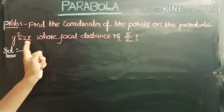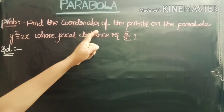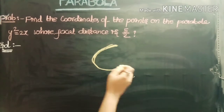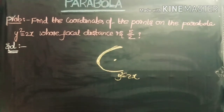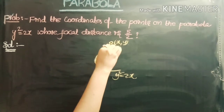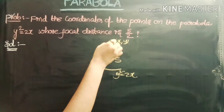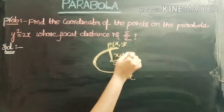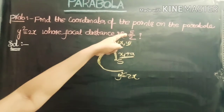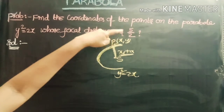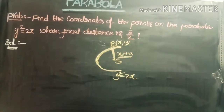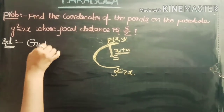Second problem: find the coordinates of the points on the parabola y² = 2x whose focal distance is 5/2. The focal distance is the distance of the point from the focus, and the formula for focal distance is x₁ + a. Given that the focal distance equals 5/2, we have x₁ + a = 5/2. We need to find the coordinates of point P(x, y) on the parabola.